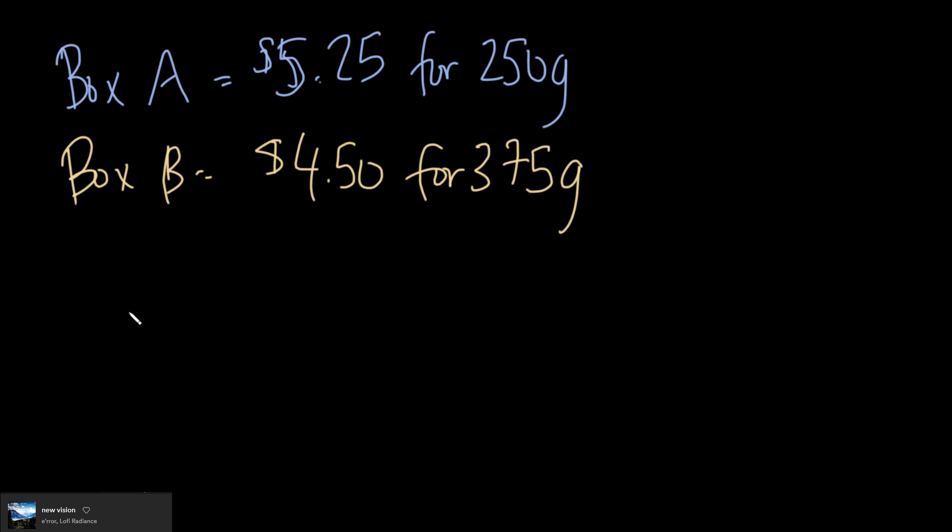So I have to divide $5.25 by 250 grams to figure out the price per gram. We can do that on our calculator, so we have $5.25 divided by 250. That's going to give us 0.021.